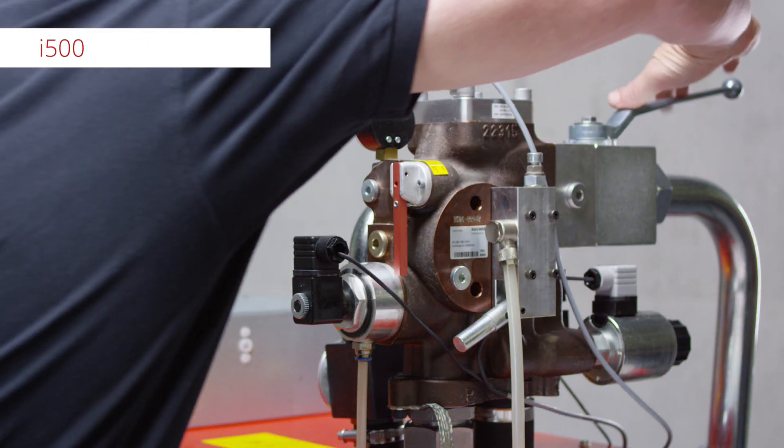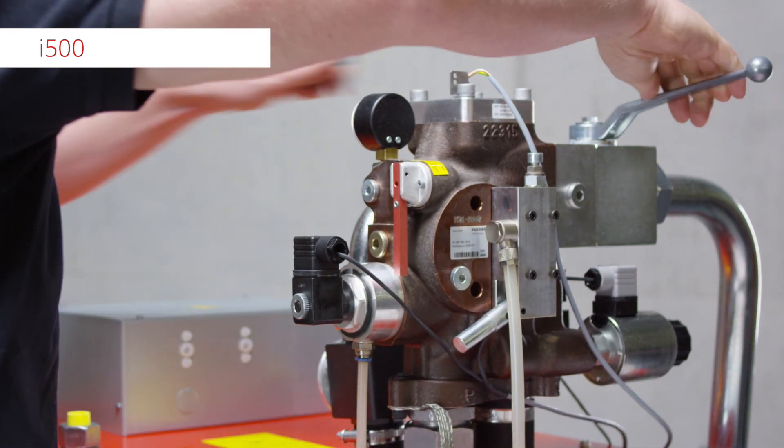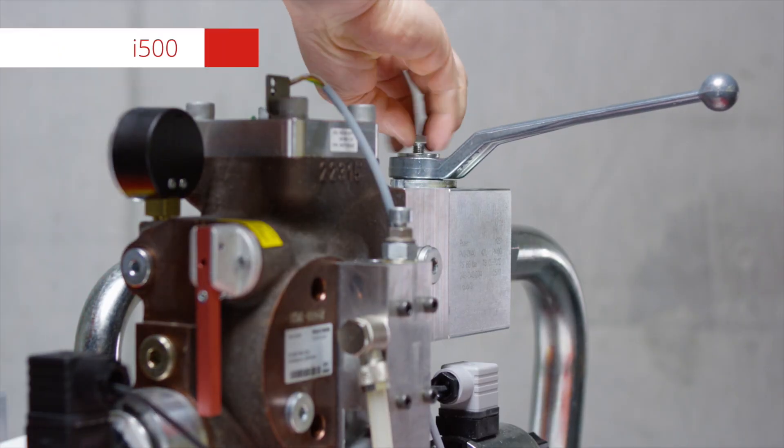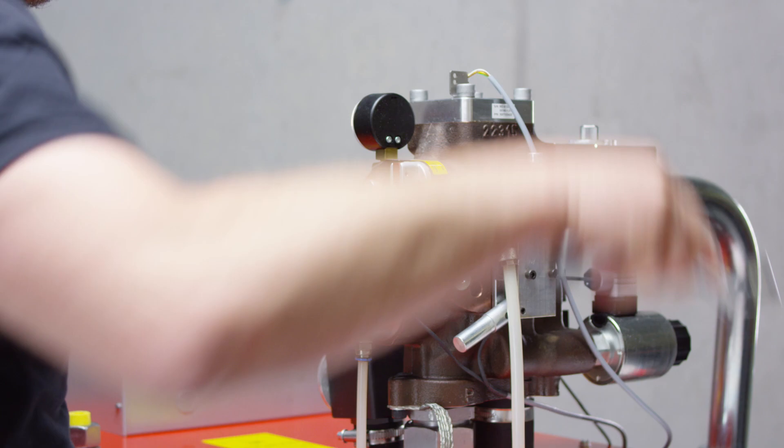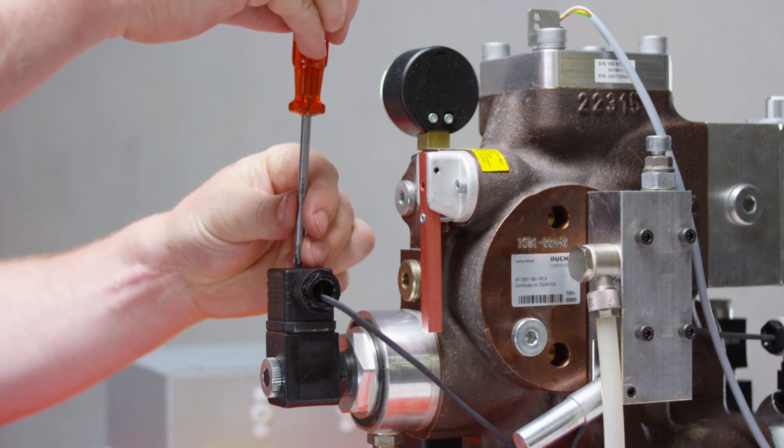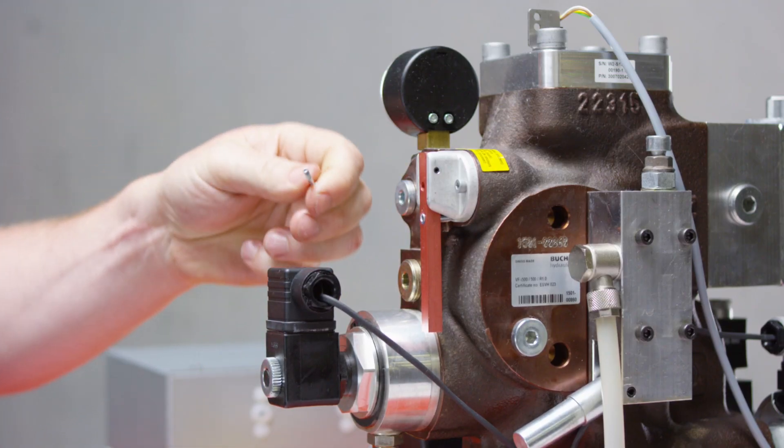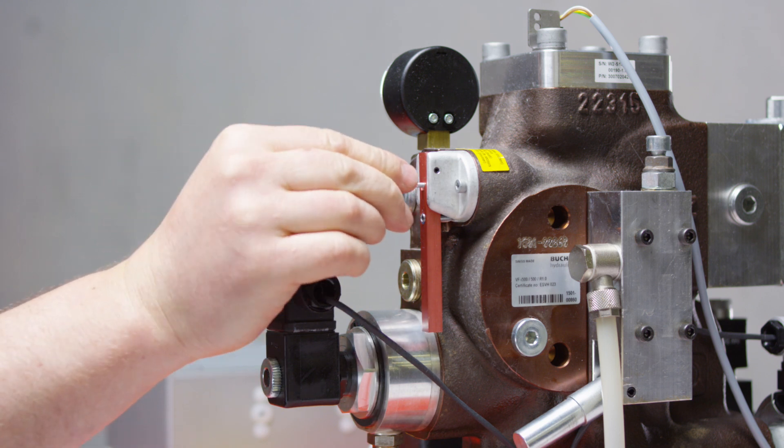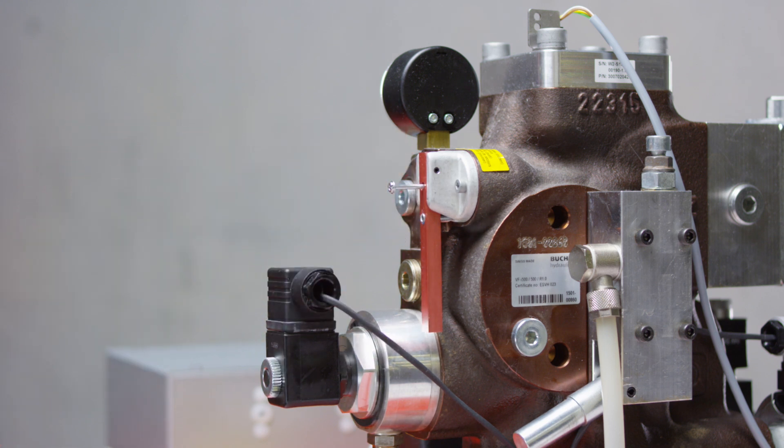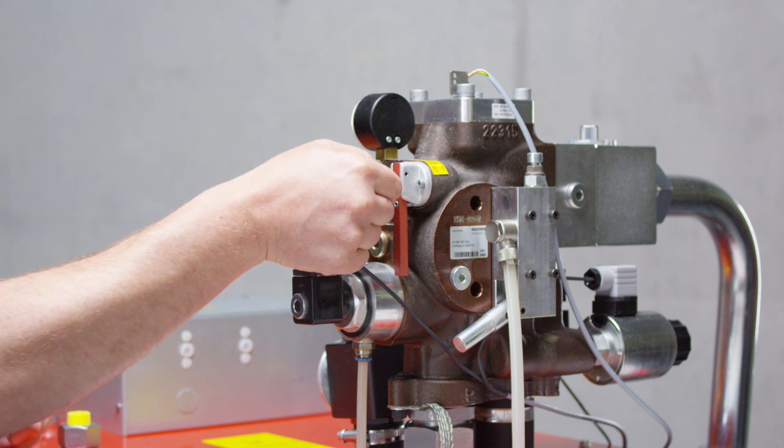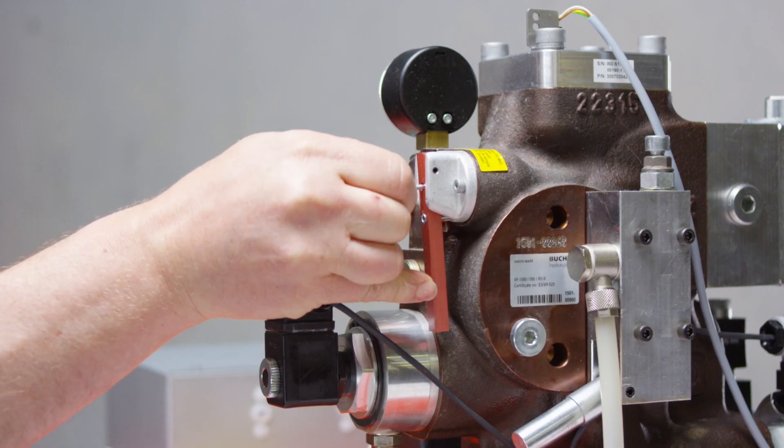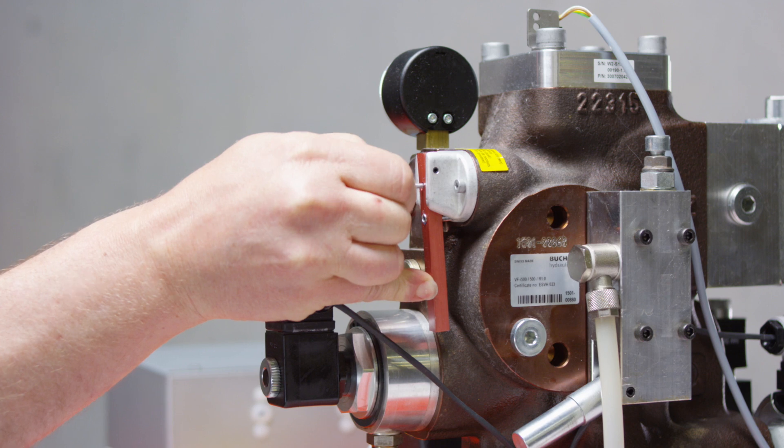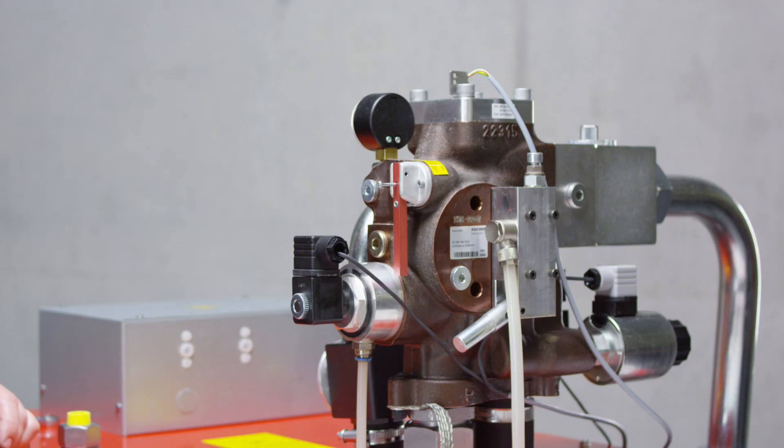For the I500, close the ball valve and remove the lever. Remove the M3 screw from the solenoid plug. Screw it into the opening of the lever of the emergency lowering. Pull the M3 screw and simultaneously press the lever of the emergency lowering until the pressure is completely released.